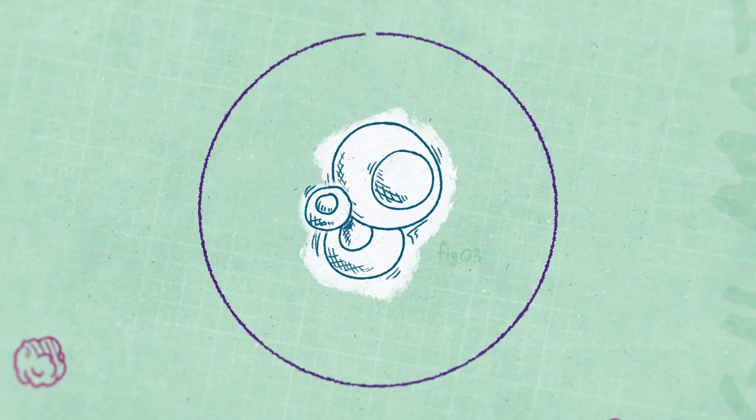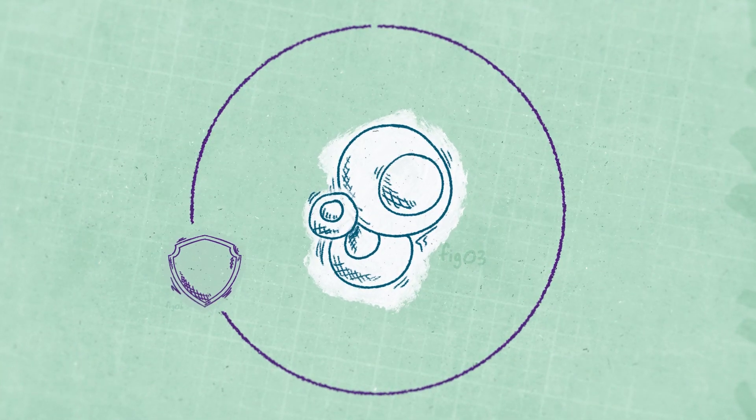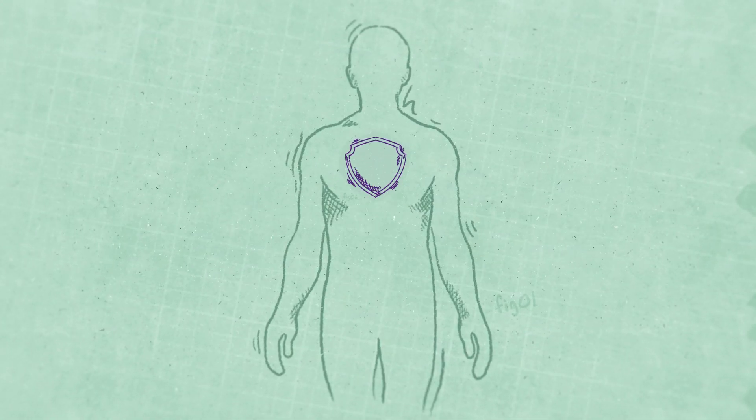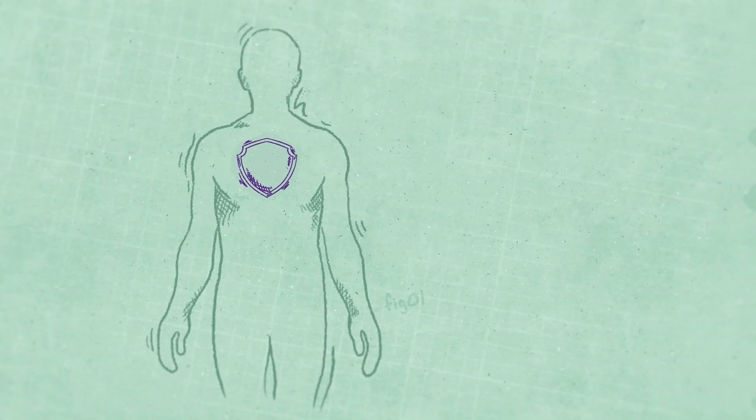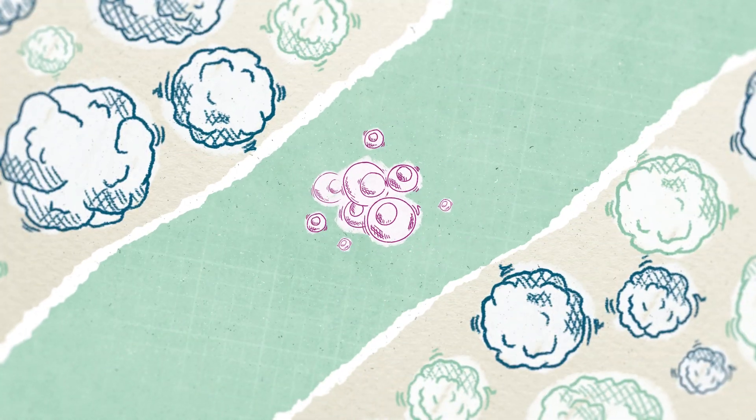Therefore, these cells need protection to prevent rejection by the immune system. This is the body doing its job to keep itself safe. However, it's important to make sure that the implanted therapeutic cells can also be protected.